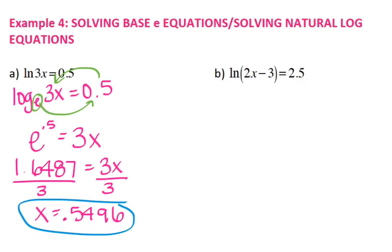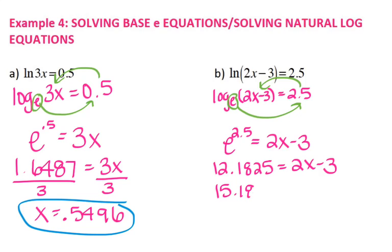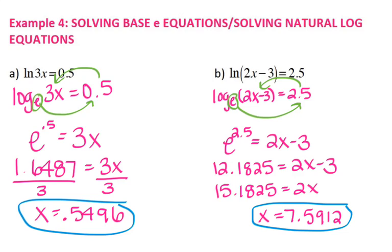Same thing for letter b. Natural log is a log base e of 2x minus 3 equals 2.5. Start with my base for my logarithm, swing across, swing back across. So I have e to the 2.5 equals 2x minus 3. e to the 2.5 is 12.1825. Add 3 to both sides: that gives you 15.1825 equals 2x. Divide by 2 and you get x equals 7.5912. These two problems had a logarithm equals a number, so we changed it to exponential form.